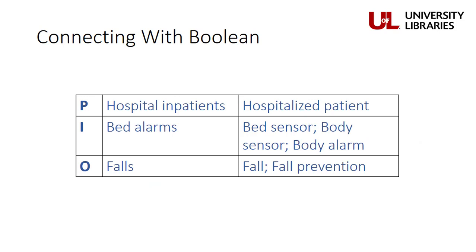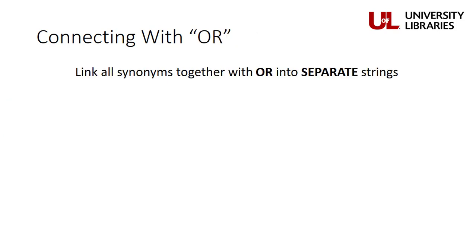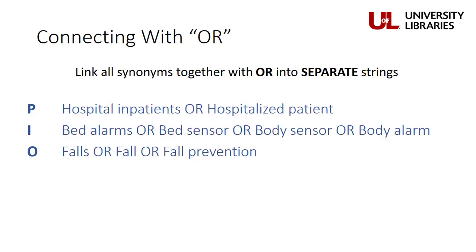The first step in combining our terms together is to connect our synonyms using OR into separate, unique search strings — a different search string for all of our different synonyms in P, I, and O respectively. We link our synonyms together with OR because OR is an expander. We want to find as many different articles on this topic as possible, so we want to give as many terms as possible in order to get the highest yield back. Connecting our synonyms together with OR would look something like this, with all similar terms linked together with OR while remaining in their own separate strings.